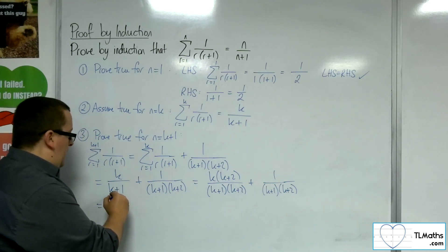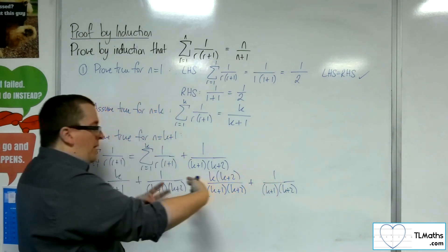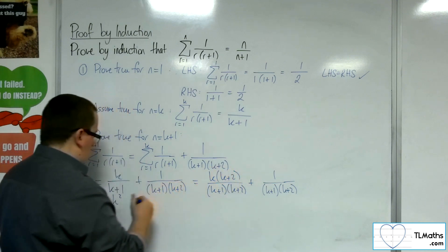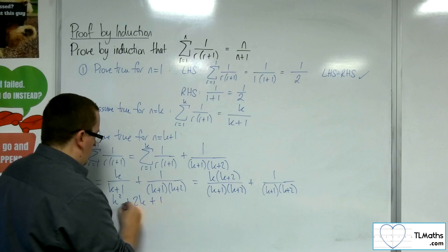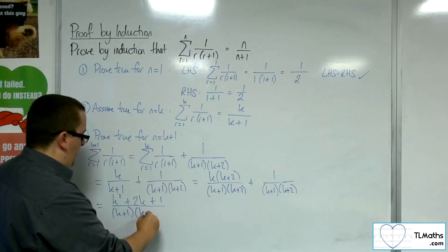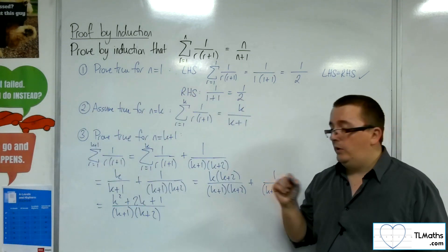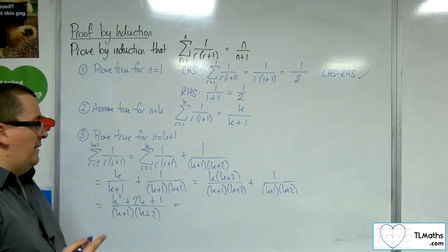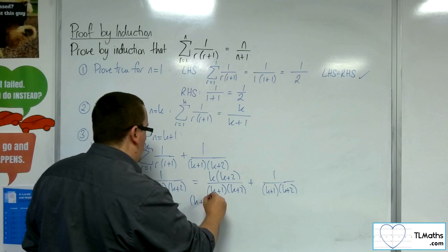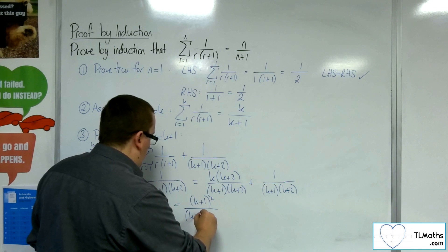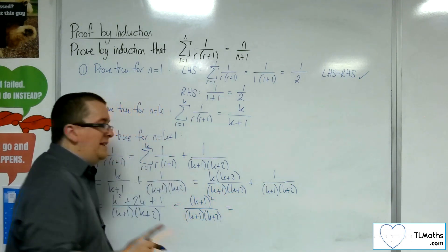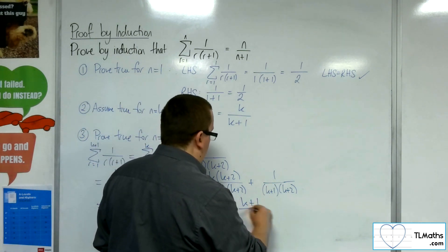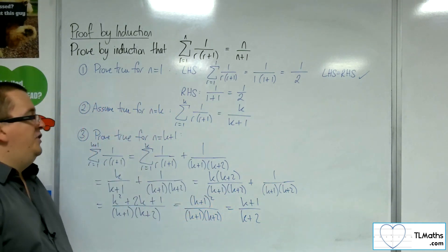Now we can combine them. Multiplying out the bracket and adding the 1, the numerator becomes k squared plus 2k plus 1, over the denominator k plus 1 times k plus 2. Don't expand the denominator — it's useful to keep it factorised. The numerator k squared plus 2k plus 1 factorises to k plus 1 times k plus 1. So we have k plus 1 squared over k plus 1 times k plus 2, and we can cancel a k plus 1 from numerator and denominator, giving k plus 1 over k plus 2.